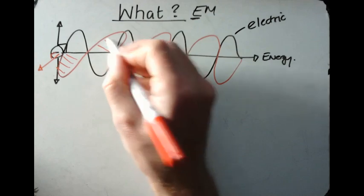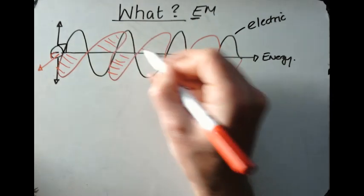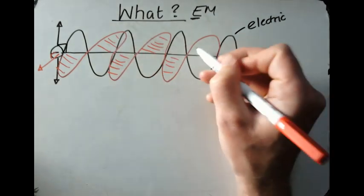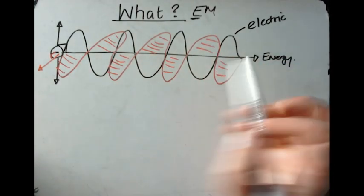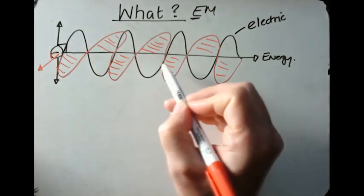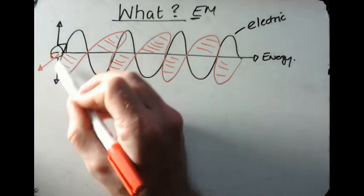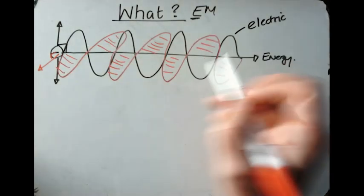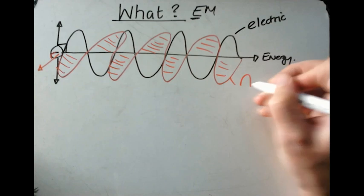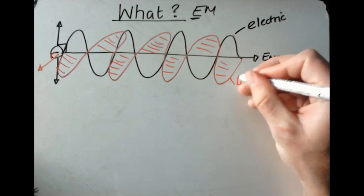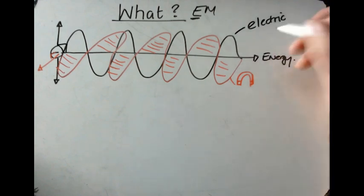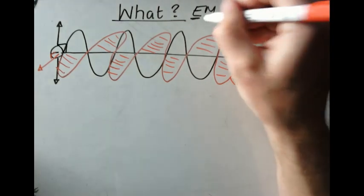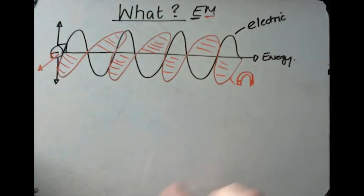So we've got the electric transverse, and then we've also got this other transverse — because it's still at 90 degrees to the oscillation — the magnetic transverse. That's why it's the E and the M: electromagnetic. That's what an electromagnetic wave is.